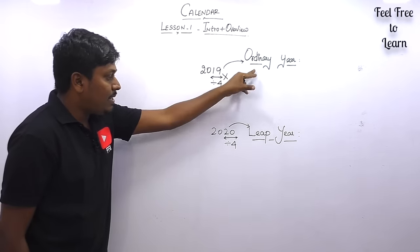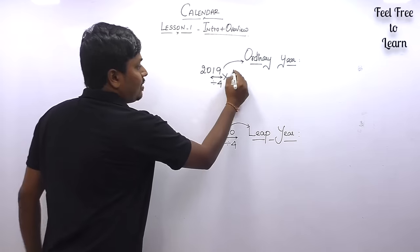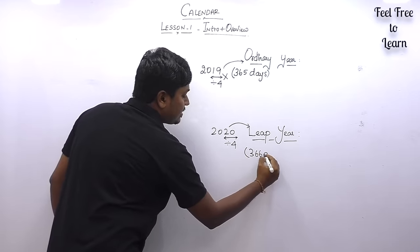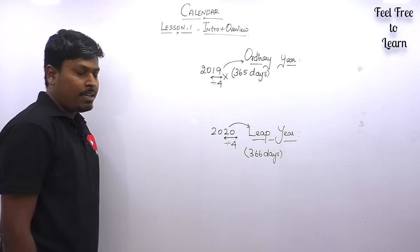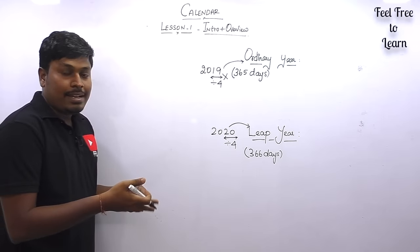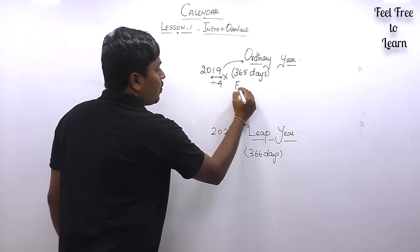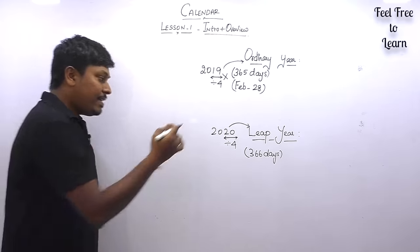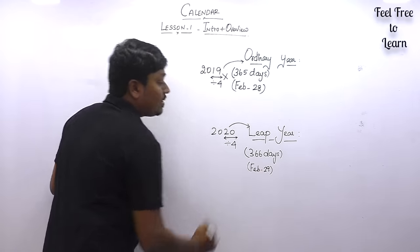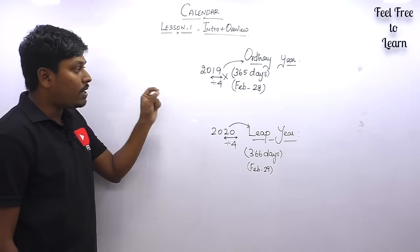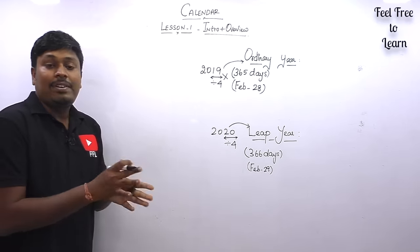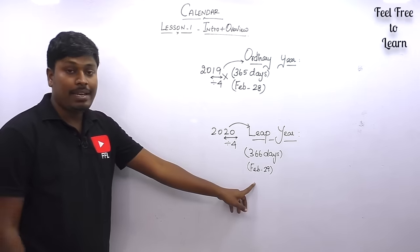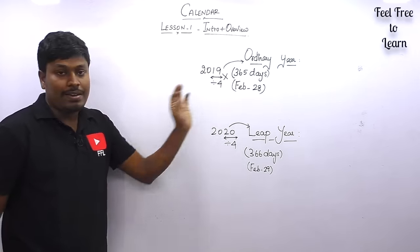The difference between an ordinary year and a leap year: an ordinary year has only 365 days, but a leap year has 366 days. The only change happens in the month of February. In 2019 (an ordinary year), February has only 28 days. In a leap year, February has 29 days. That is why a leap year contains 366 days and an ordinary year contains 365 days.